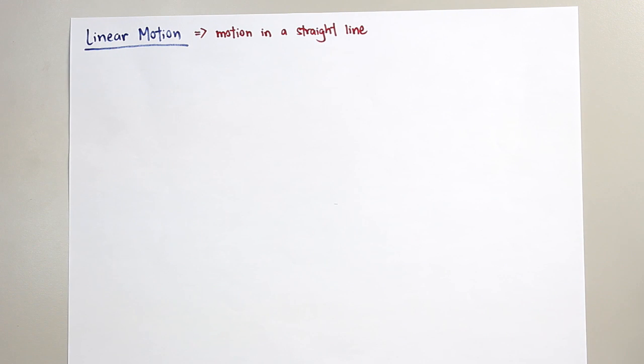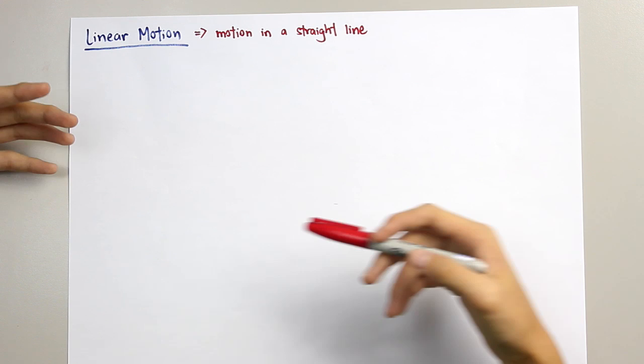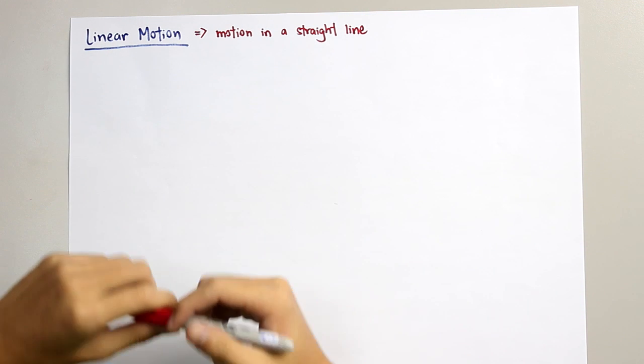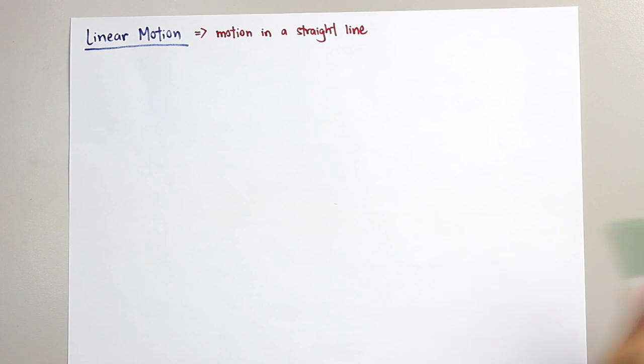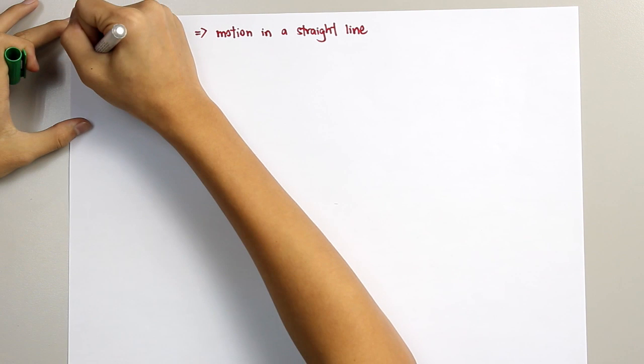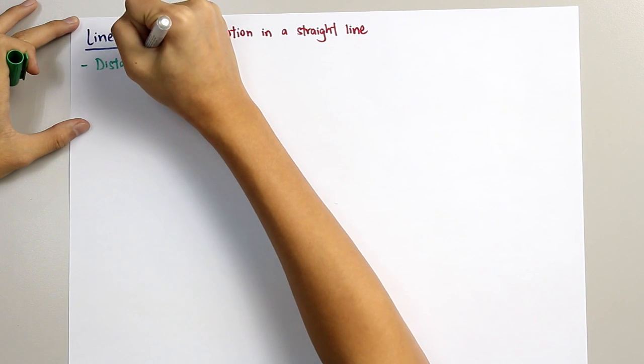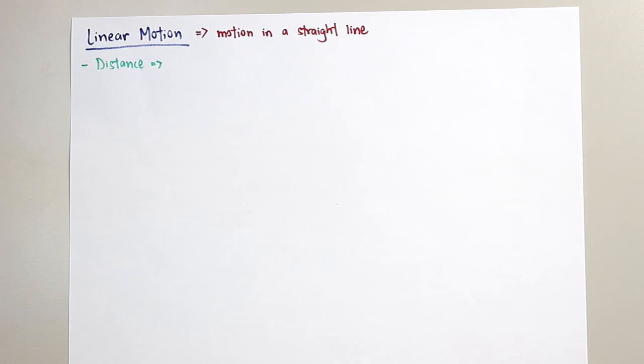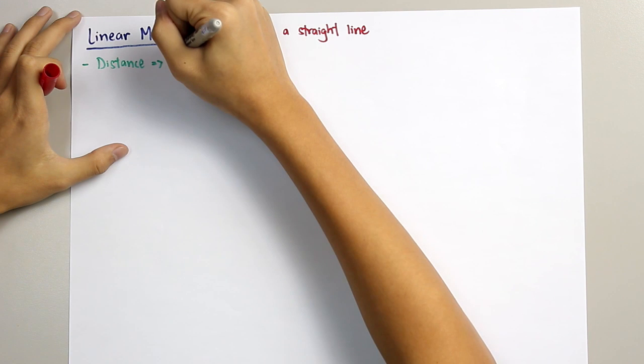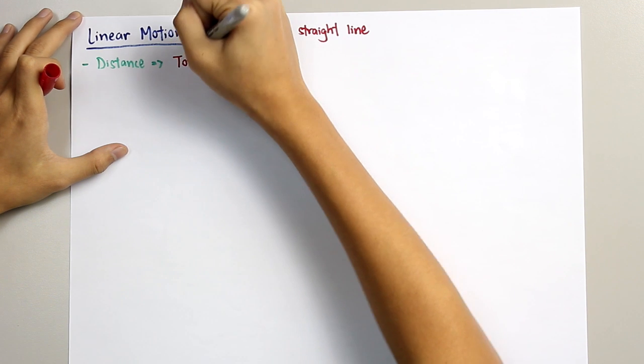Let's start from the introduction of distance, displacement, speed, and velocity. First, distance. Distance is defined as the total length of path.